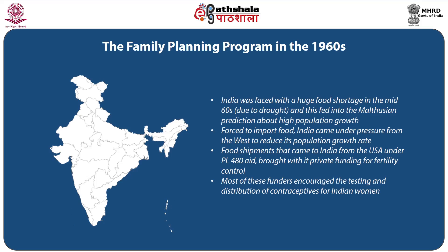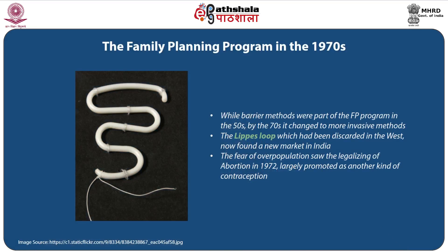India came under pressure from the west to reduce its population growth rate. Food shipments that came to India from the United States under PL 480 aid brought with it private funding for fertility control. Most of these funders encouraged the testing and distribution of contraceptives for Indian women. While barrier methods were part of the family planning program in the 1950s, by the 1970s it changed to more invasive methods. The Lippes Loop, which had been discarded in the west, now found a new market in India. The fear of overpopulation saw the legalizing of abortion in 1972, largely promoted as another kind of contraception.